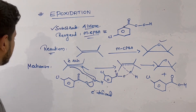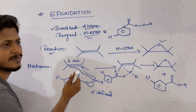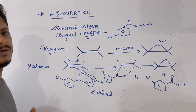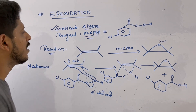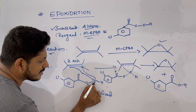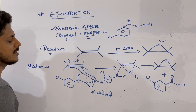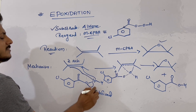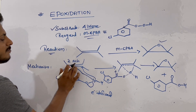Now let us look at the mechanistic part of this reaction. Alkene is an electron-rich system — it is highly electron-dense, so it can act as a nucleophilic center. In organic chemistry, an electron-rich or electron-excess system is called a nucleophilic center. Looking at mCPBA, the peroxide oxygen is highly electron-deficient because two oxygens are adjacent to each other, creating high electron deficiency. So this oxygen acts as an electrophilic center.